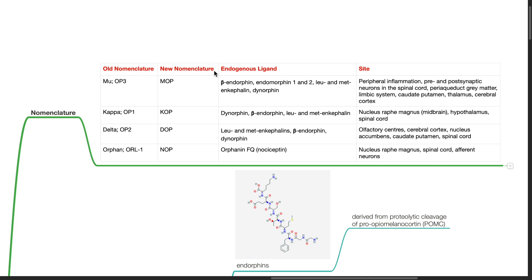The new nomenclature for KAPPA or OP1 receptor is the KOP receptor. Endogenous ligands for this receptor are dynorphin, beta-endorphin, leucine and methionine enkephalin. KOP receptors are located at the nucleus raphe magnus in the midbrain, hypothalamus, and spinal cord.